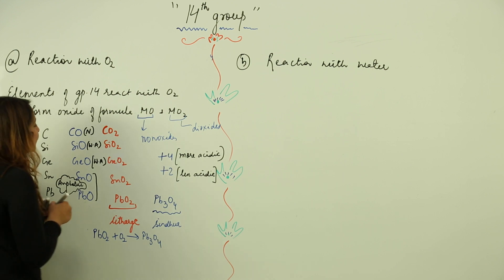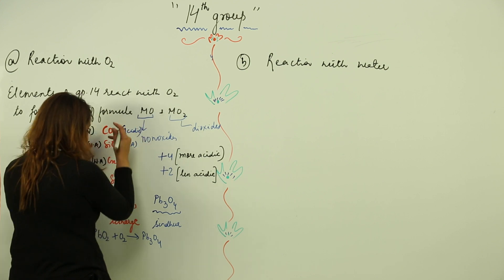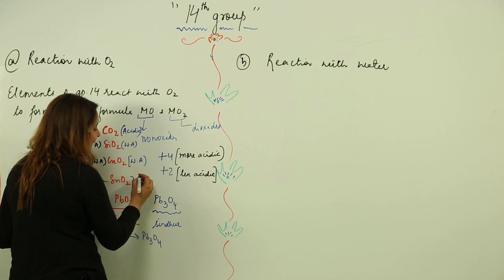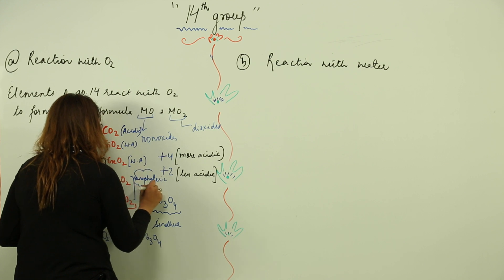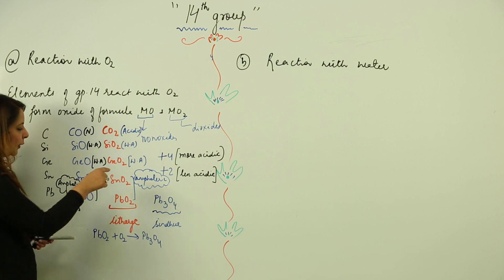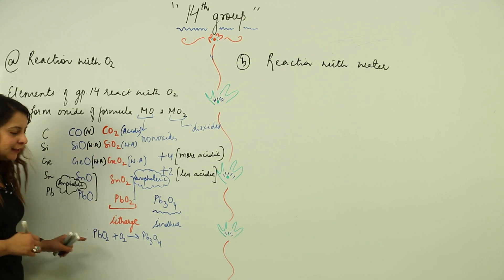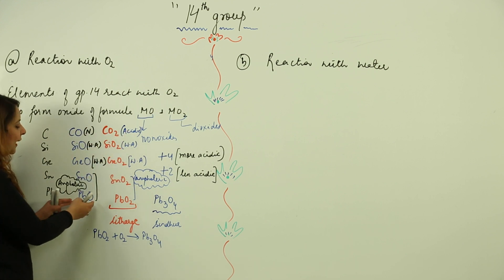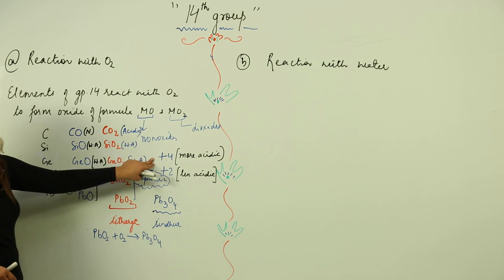For the dioxides: carbon dioxide is acidic, silicon dioxide is less acidic than carbon dioxide, germanium dioxide is more weakly acidic, and tin dioxide and lead dioxide are amphoteric in nature — acidic as well as basic. So whether in monoxide or dioxide form, tin and lead oxides are amphoteric. In the +4 oxidation state they are more acidic, and in +2 they are comparatively less acidic.